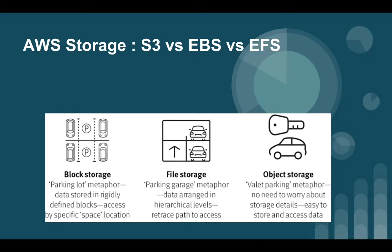Block storage stores data by splitting it into equal-sized pieces at the block level. You can see the example of a parking slot — there is a fixed size of space for parking and you have to park your vehicle in that particular space. In block level storage, raw volumes of storage are created and each block can be controlled as an individual address. These blocks are controlled by the server's operating system and each block can be individually formatted with the required file system.